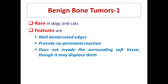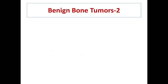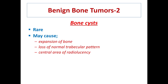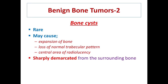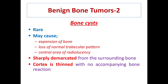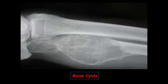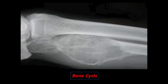Benign bone tumors are rare in cats and dogs. Their features include well-marked edges, no periosteal reaction, and they do not invade surrounding tissue, though they may displace it due to their size. Bone cysts are rare; they cause expansion of bone, loss of normal trabecular pattern, and a central area of radiolucency. They are sharply demarcated by the surrounding bone. The cortex is very thinned and there is no periosteal reaction. In this radiograph of a bone cyst, the cortex is thinned and the inner core is radiolucent.